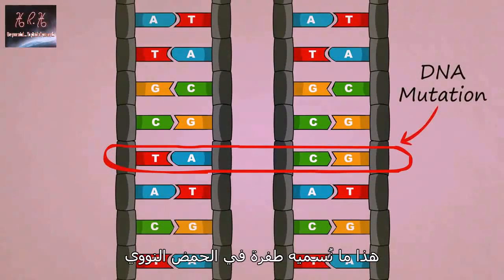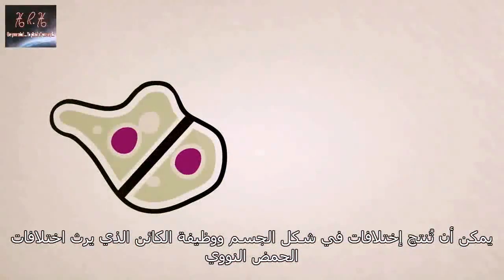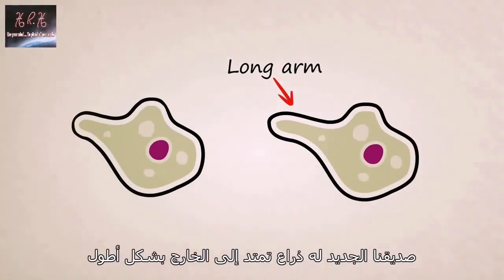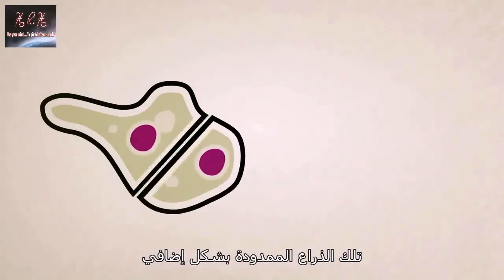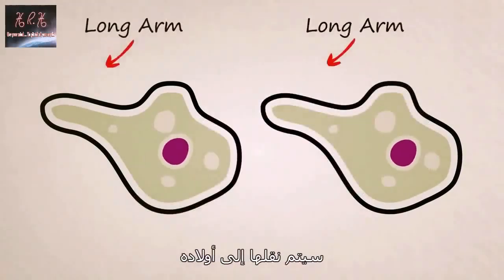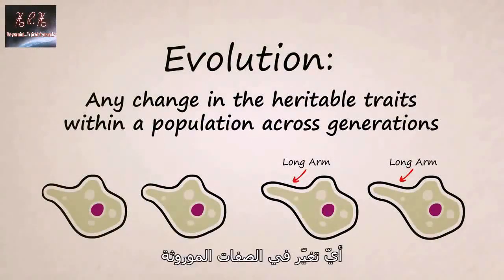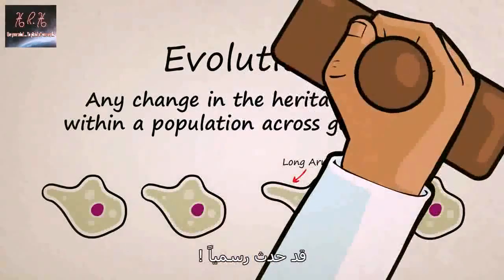This is what we call a DNA mutation. These mutations, which happen completely on accident and randomly to any part of a DNA strand, can produce variation in the body shape and function of the creature who inherits the modified DNA. In this case, our new little friend has an arm that stretches extra long. If he survives long enough to grow and reproduce, that extra stretchy arm, which is now coded for in his DNA, will be passed on to his children. Evolution — any change in the heritable traits within a population across generations — has officially occurred.